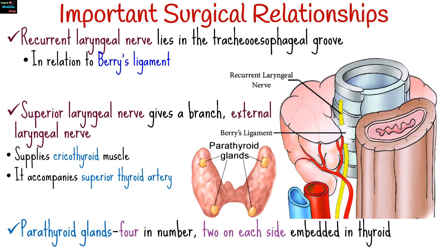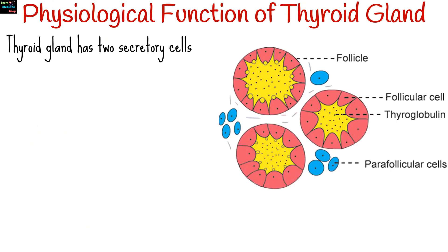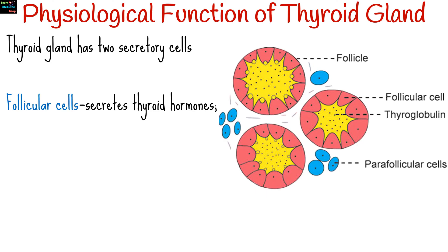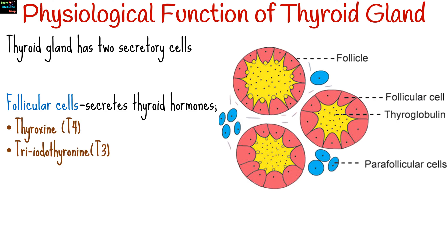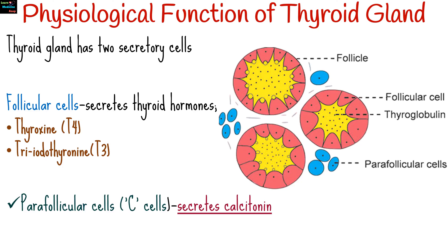Parathyroid glands, four in number — two on each side — are embedded in the thyroid. The thyroid gland has two secretory cell types: follicular cells that secrete thyroid hormones, thyroxine or T4, and triiodothyronine or T3; and parafollicular cells, or C-cells, that secrete calcitonin.